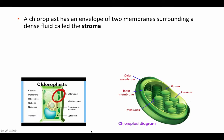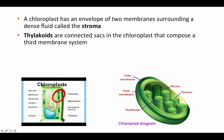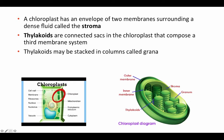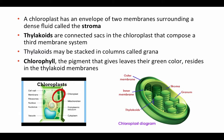Looking at the level of the chloroplast, we see a plant cell with its cell wall and the little chloroplasts inside mesophyll cells. The chloroplast has a double envelope — two membranes surrounding a dense fluid called the stroma, which is the space surrounding the thylakoid stacks. The thylakoids are connected sacs within the chloroplast that compose a third membrane system, and they may be stacked in columns called grana — singular granum. Chlorophyll is the pigment that gives leaves their green color, residing in the membranes surrounding these thylakoid organelles, actually inserted into the phospholipid bilayer.